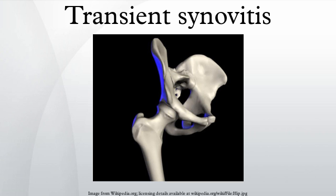Synonyms: in addition to the terms mentioned above, irritable hip has historically been termed transitory coxitis, coxitis fugax, acute transient epiphysitis, coxitis serosa or simplex, phantom hip disease, and observation hip.